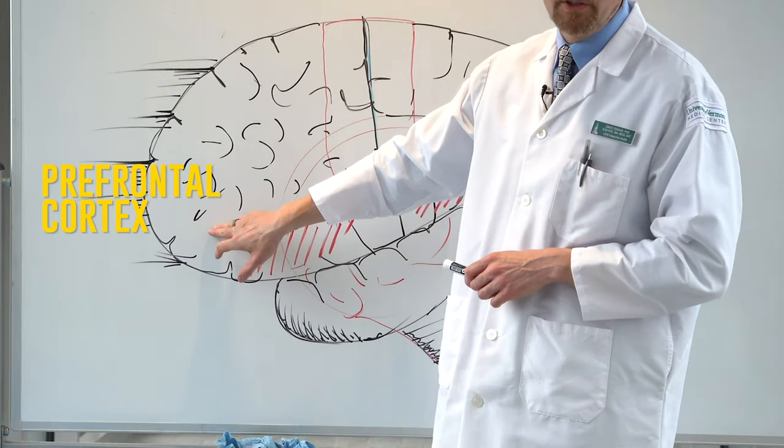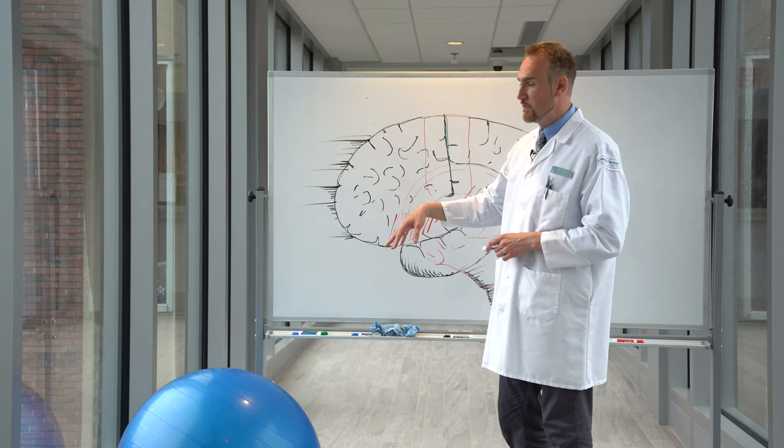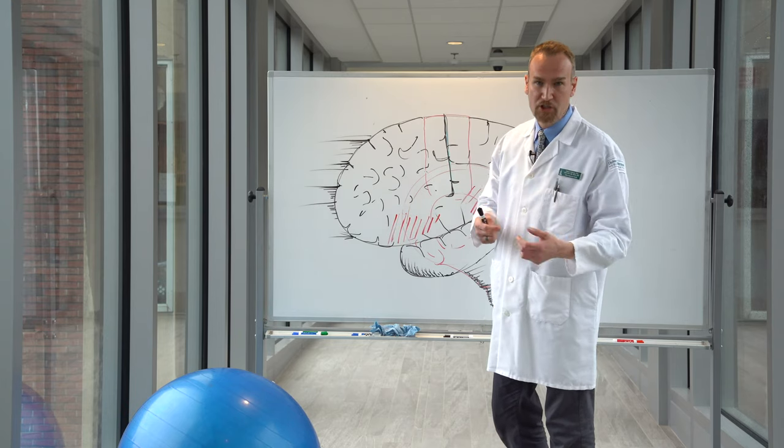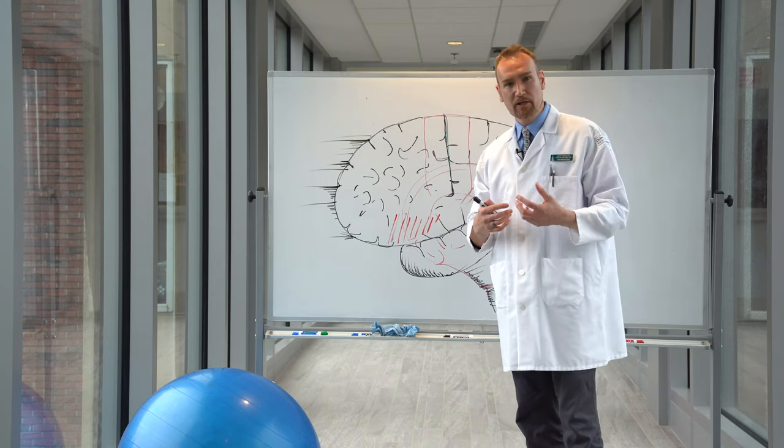The first one is the prefrontal cortex right here, which is part of our frontal lobe that is responsible for our rational decision-making as well as analytical self.